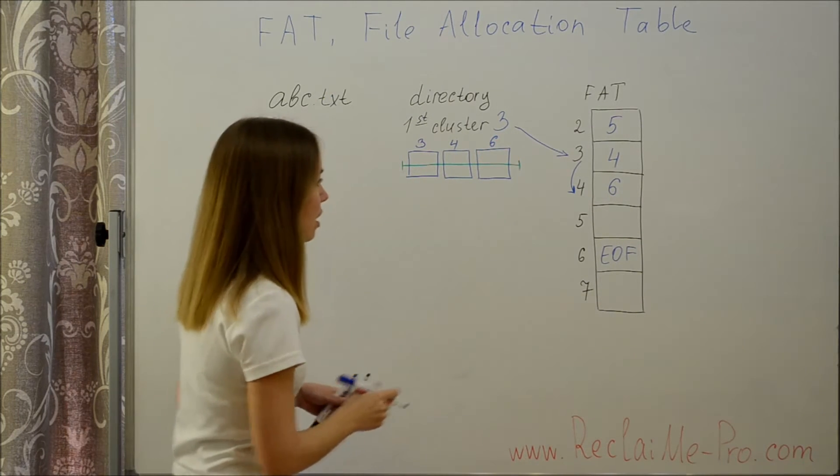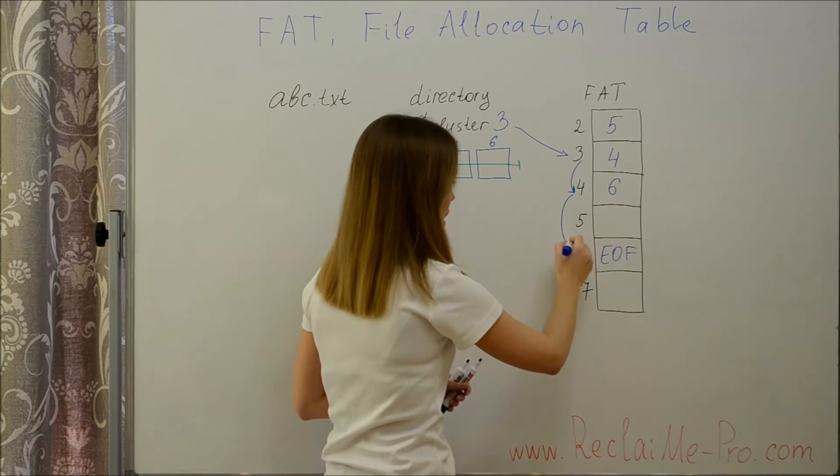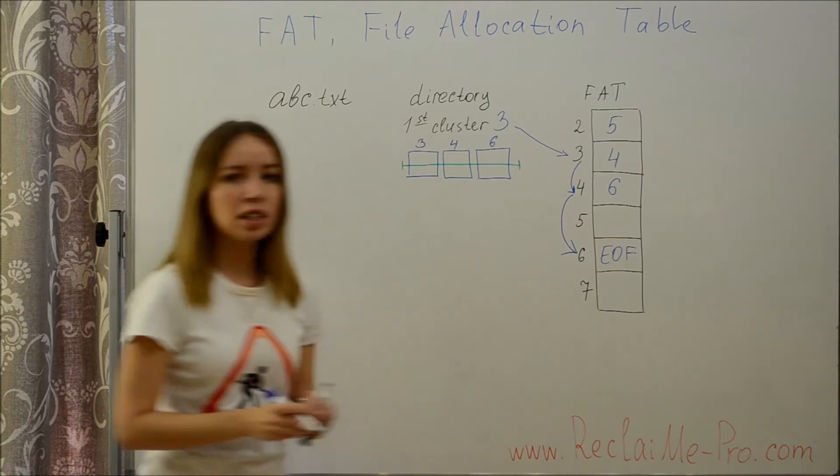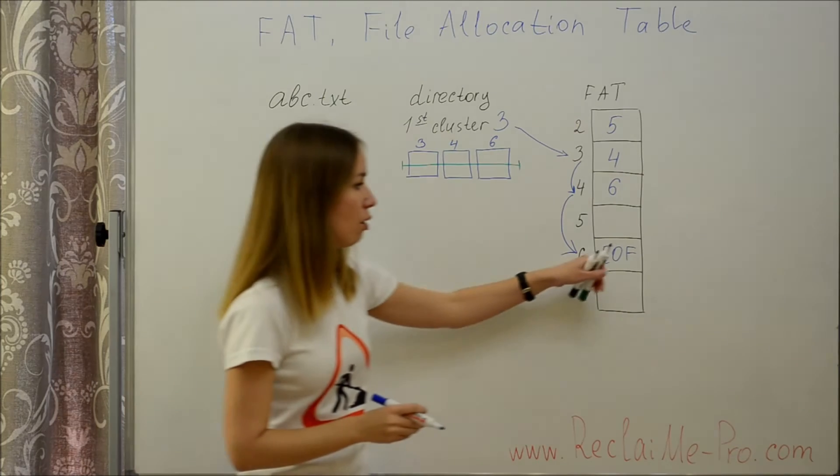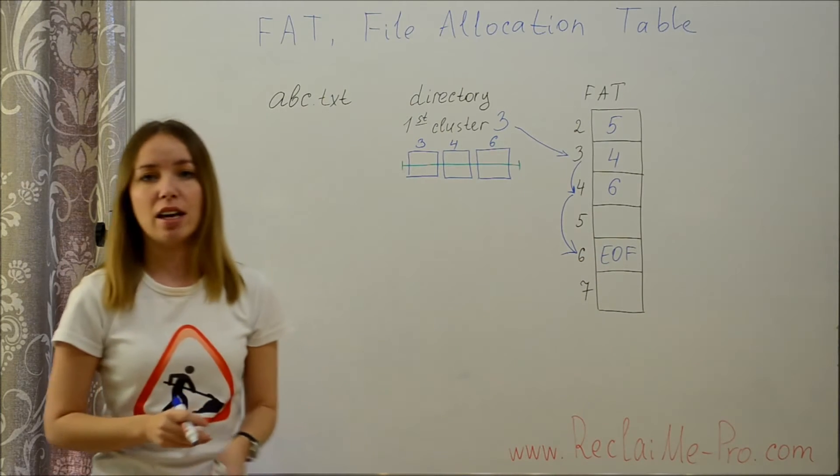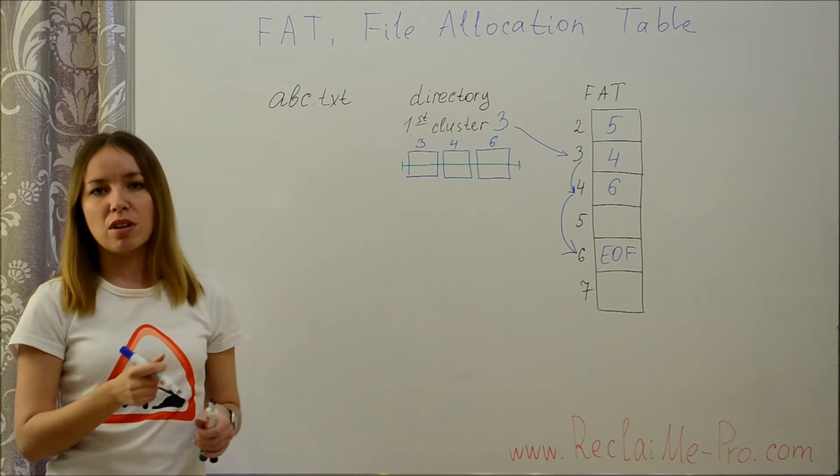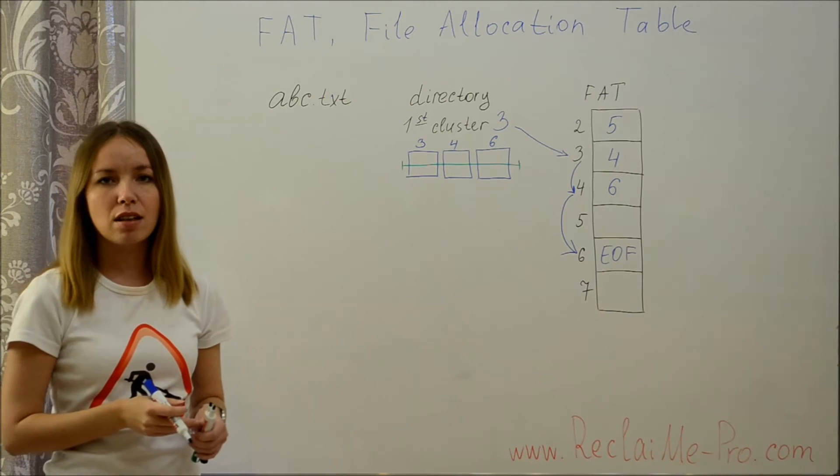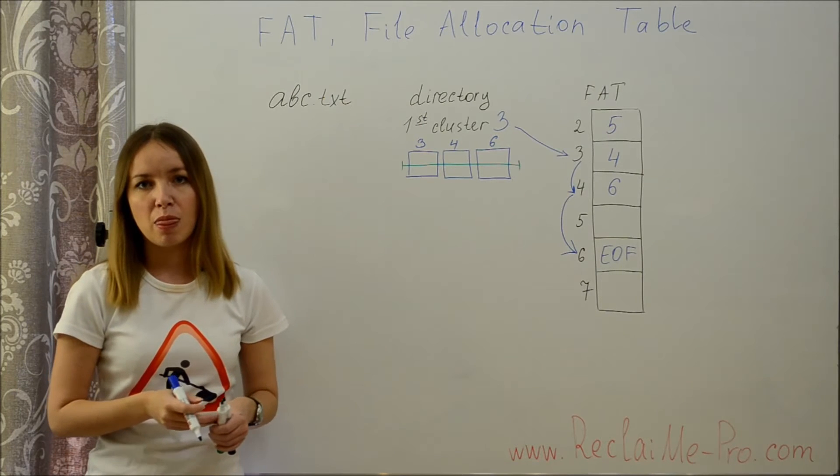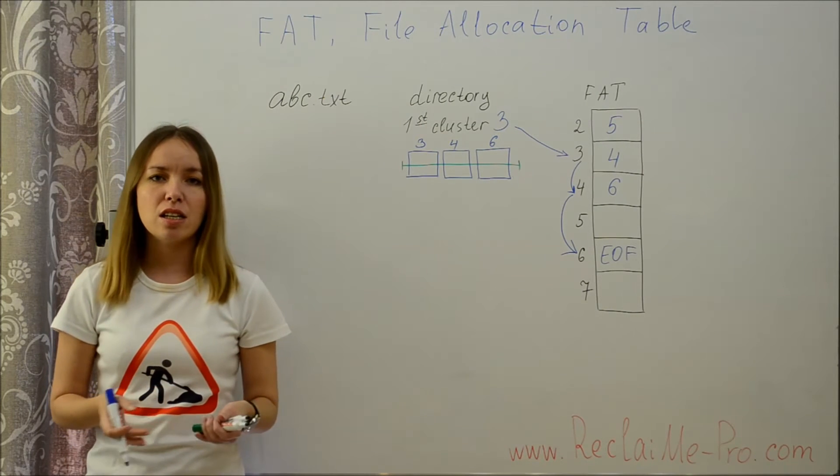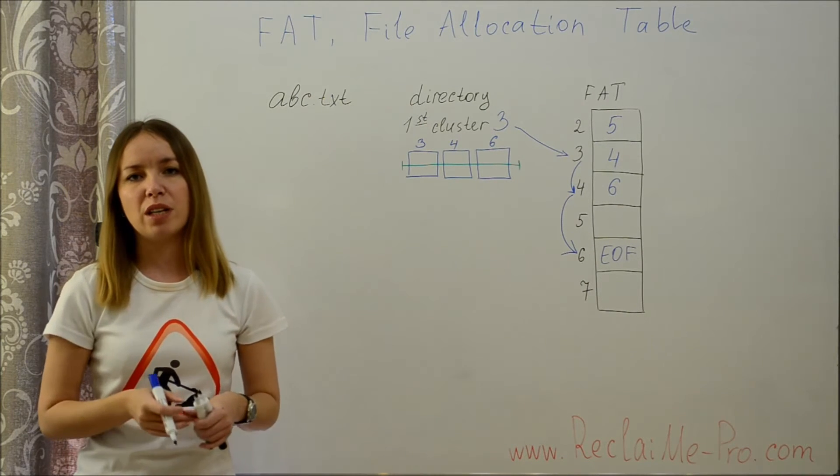But when a file system reads element 6, it sees EOF meaning the end of the file. Thus data is taken from clusters while the next cluster is taken from FAT table.